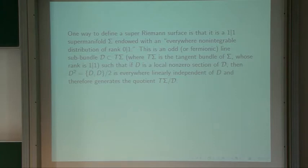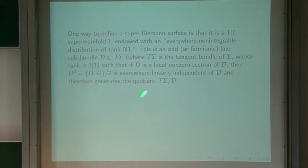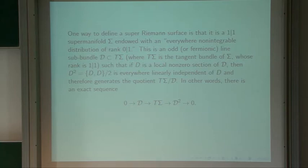Another way to say it: we're given an exact sequence where the tangent bundle contains the sub-bundle curly D, and its quotient is curly D-squared. The isomorphism from curly D to curly D-squared is given by picking any section D of curly D — its square gives a section of curly D-squared. It's not hard to show that given such an non-integrable distribution, one can pick local coordinates z and theta (z even, theta odd) such that curly D has a section of the standard form D = d/d-theta + theta * d/dz.